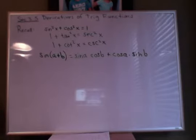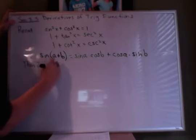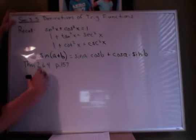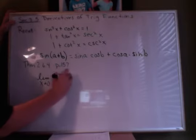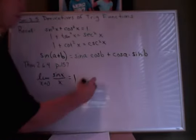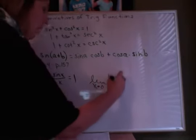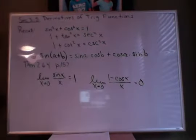In addition to the trig identities, there is another theorem that we need to recall — Theorem 2.6.4, on page 157 in your textbook — which tells us that the limit as X approaches 0 of sine X over X is equal to 1. It also tells us that the limit as X approaches 0 of 1 minus the cosine of X over X is equal to 0. So those two are also going to come in handy here.